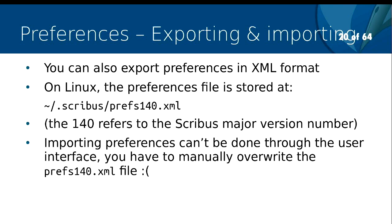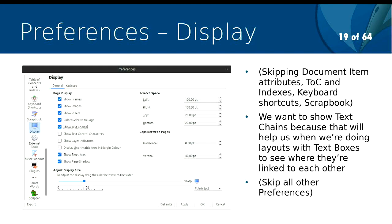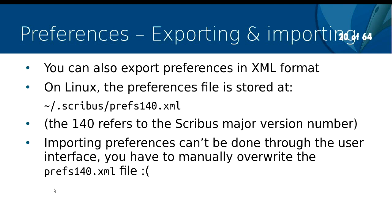For anyone who's an advanced user, you can also export these preferences in XML format, but Scribus doesn't currently have an import ability. So what you have to do if you export these preferences and want to use them on a new machine is overwrite the preferences file. We won't bother exporting and importing at the moment because you've already changed your preferences. So what I'm going to do now is get everybody to close Scribus, quit the application, and open it up again.